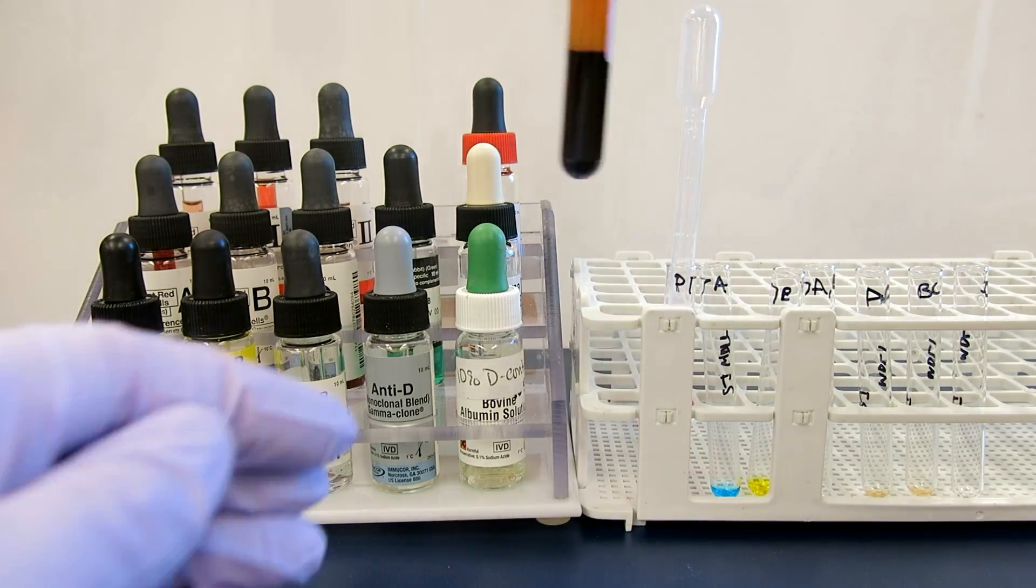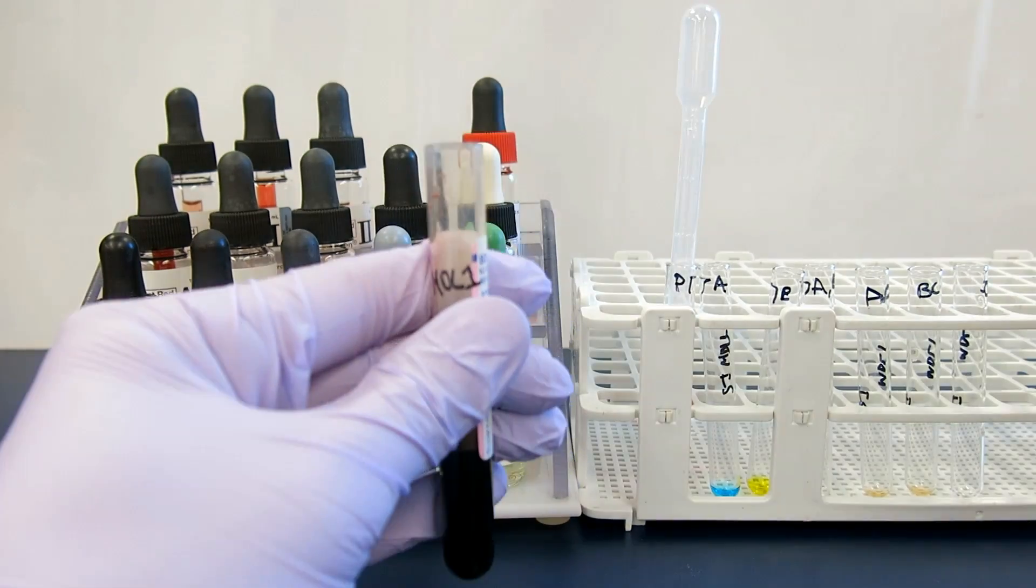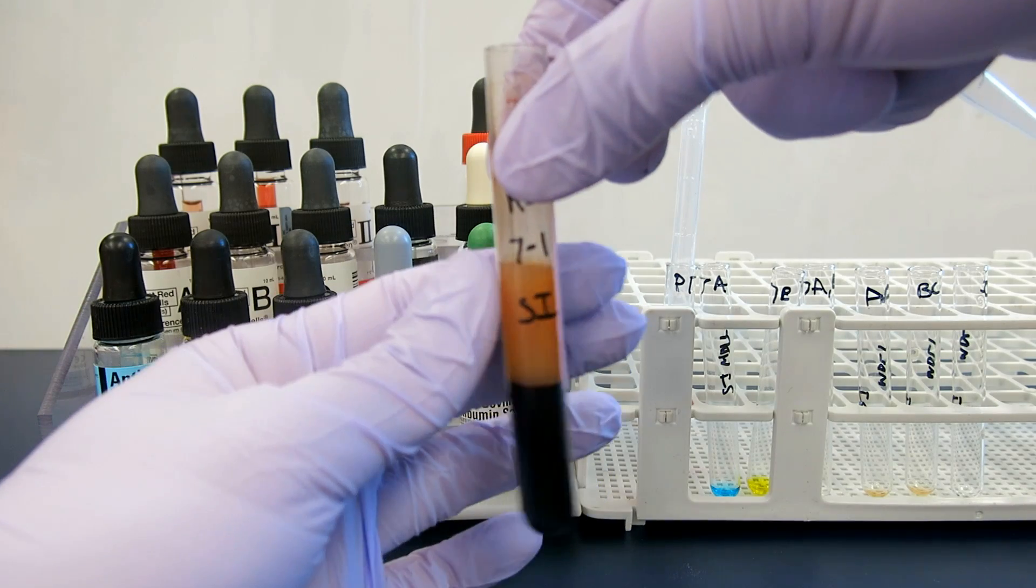Using a disposable pipette, add two drops of patient plasma into tubes AC, BC, and OC.